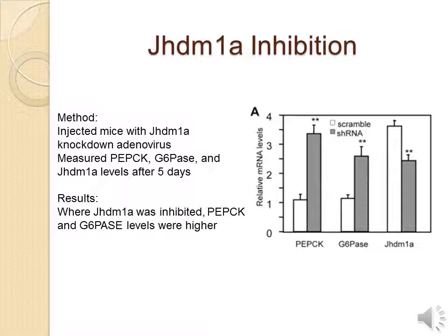This experiment tested whether JHDM1A regulates gluconeogenesis in live animals. They found five lentiviral JHDM1A knockdown constructs and verified knockdown efficiency by RT-qPCR in mouse cell culture. From these, two of the best were transferred into an adenoviral vector and verified to decrease JHDM1A levels in vitro. This was done by injecting mice with JHDM1A knockdown adenoviruses, and PEPCK, G6Pase, and JHDM1A levels were measured after five days. When JHDM1A was inhibited, there was an increase in PEPCK and G6Pase levels.